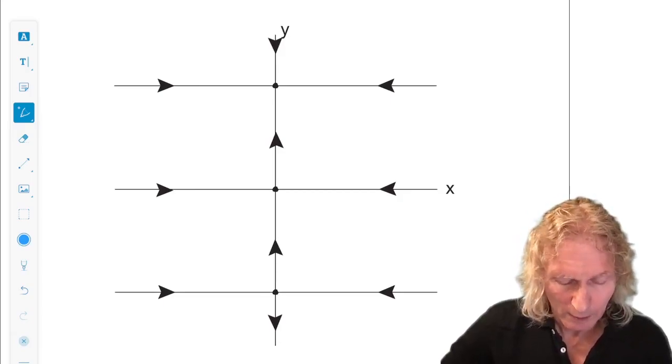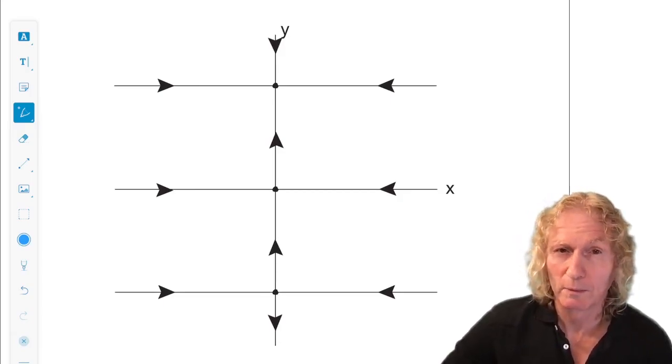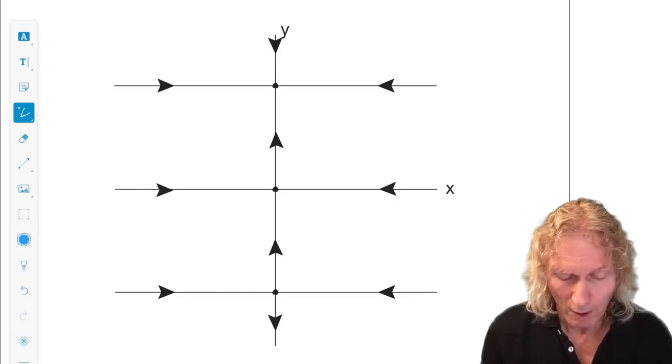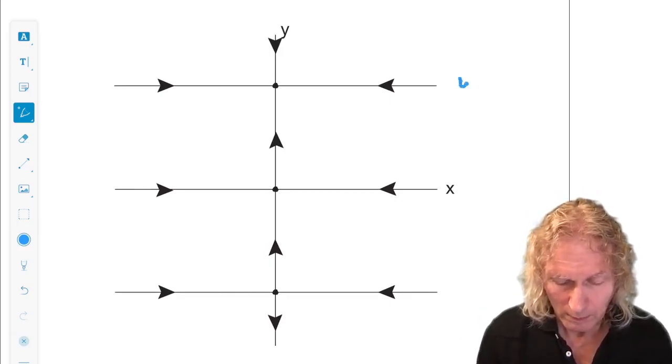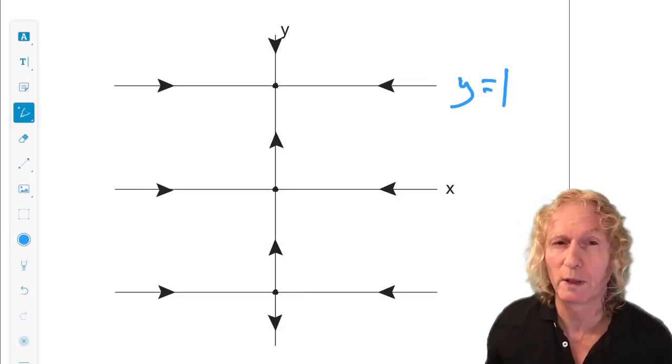So, what about attracting invariant sets? Well, y equals 1, that line, is an attracting invariant set.